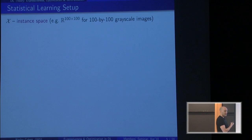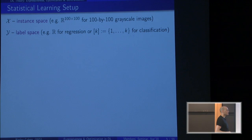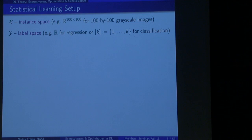We have an instance space X — the space of objects we want to say something about. For example, images: X could be 100 by 100 matrices in the case where we want to infer something about 100 by 100 grayscale images — 10,000 pixels. Y is the label space, the set of possible labels we can assign to a particular instance. For example, if we want to classify images as dog or cat, Y could be 0 or 1, or a finite set of more categories.